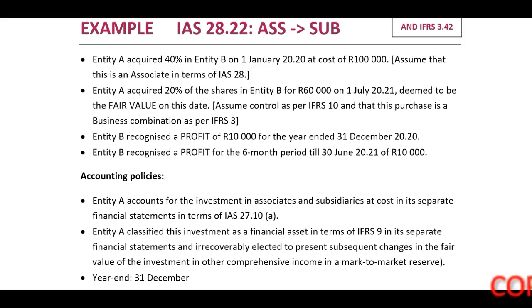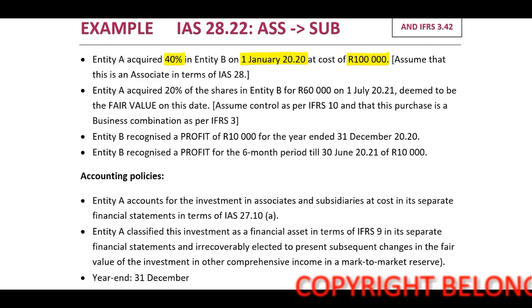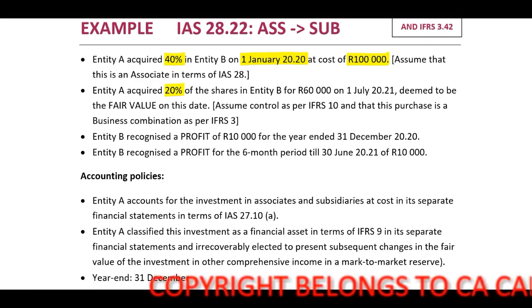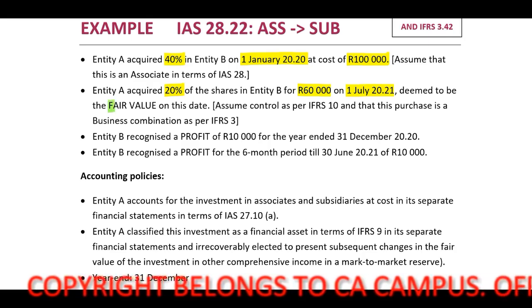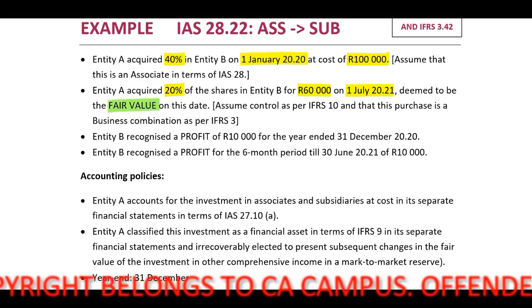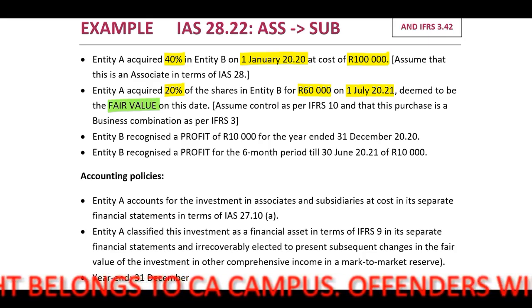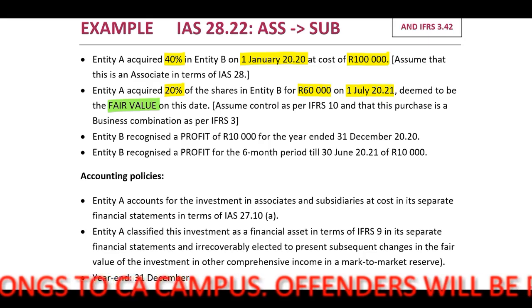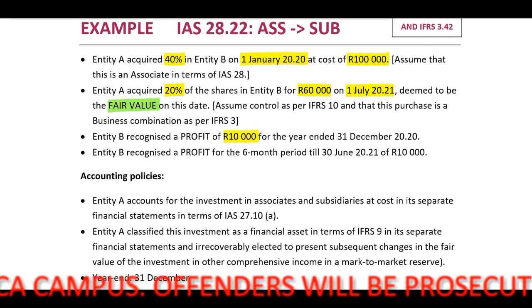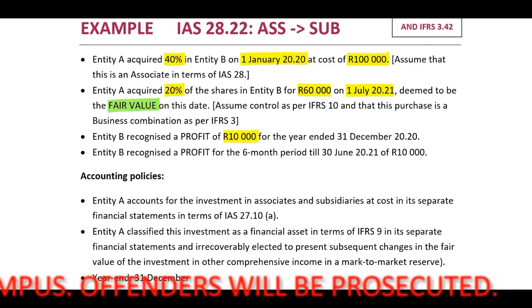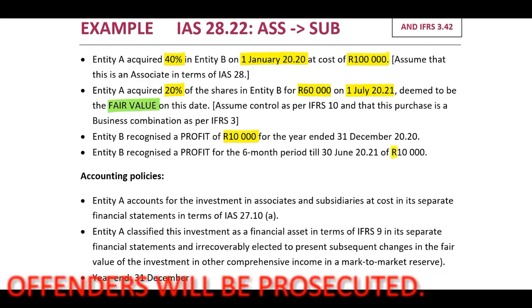Again, a very basic example. Entity A acquired 40% in Entity B on 1 January 2020 at a cost of 100,000. Assume that this is an associate. Entity A acquired 20% of the shares in Entity B for 60,000 on 1 July 2021, deemed to be the fair value on this date. Assume control as per IFRS 10 and that this purchase is a business combination as per IFRS 3. Entity B recognized profit of 10,000 for the year ended 31 December 2020, and Entity B recognized a profit for the six-month period till 30 June 2021 of 10,000.